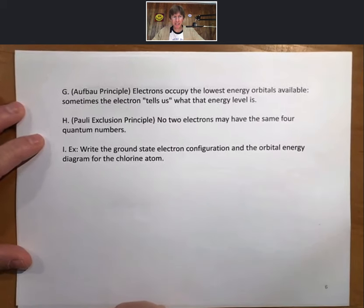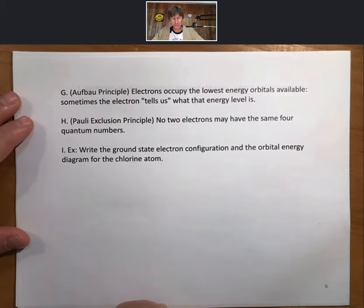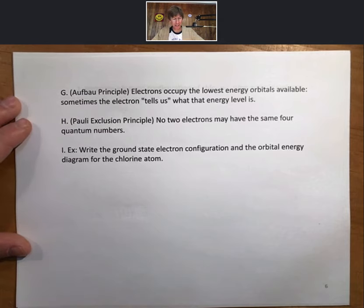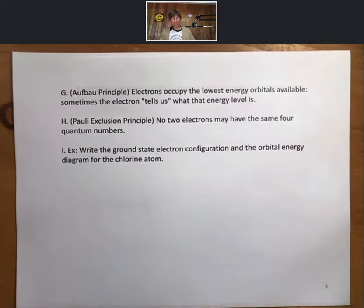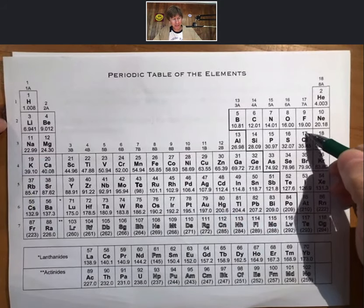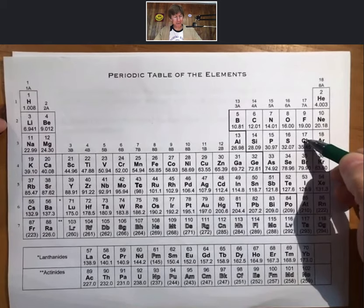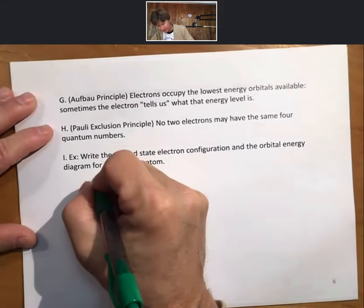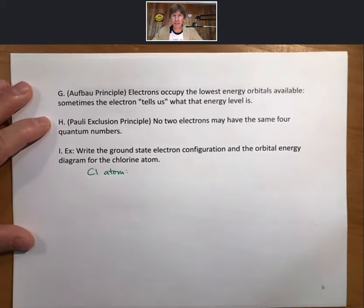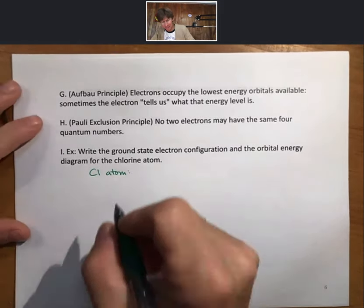Electrons occupy the lowest energy orbitals available. Sometimes the electron tells us what that energy level is. No two electrons may have the same four quantum numbers. Not an issue for us. Write the ground state electron configuration and the orbital energy diagram for the chlorine atom. Well, we still have our handy-dandy periodic table. It tells us that the chlorine atom has 17 electrons. It has 17 protons as well. Remember, atoms have equal numbers of protons and electrons. 17 electrons.